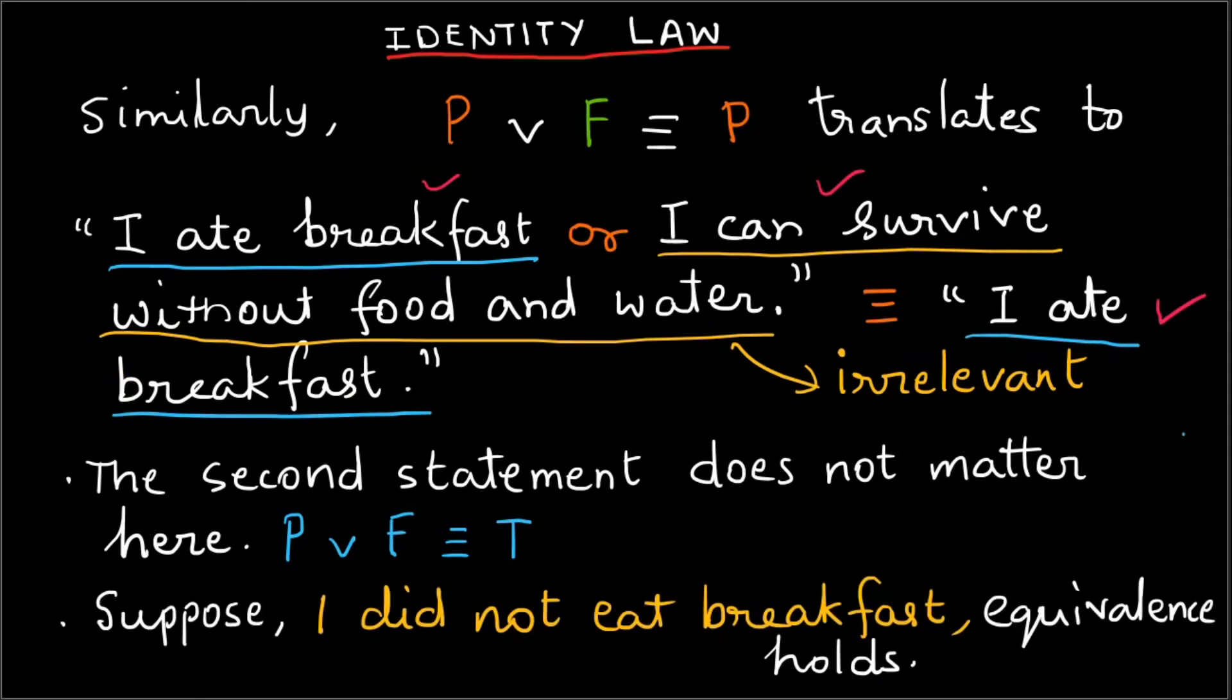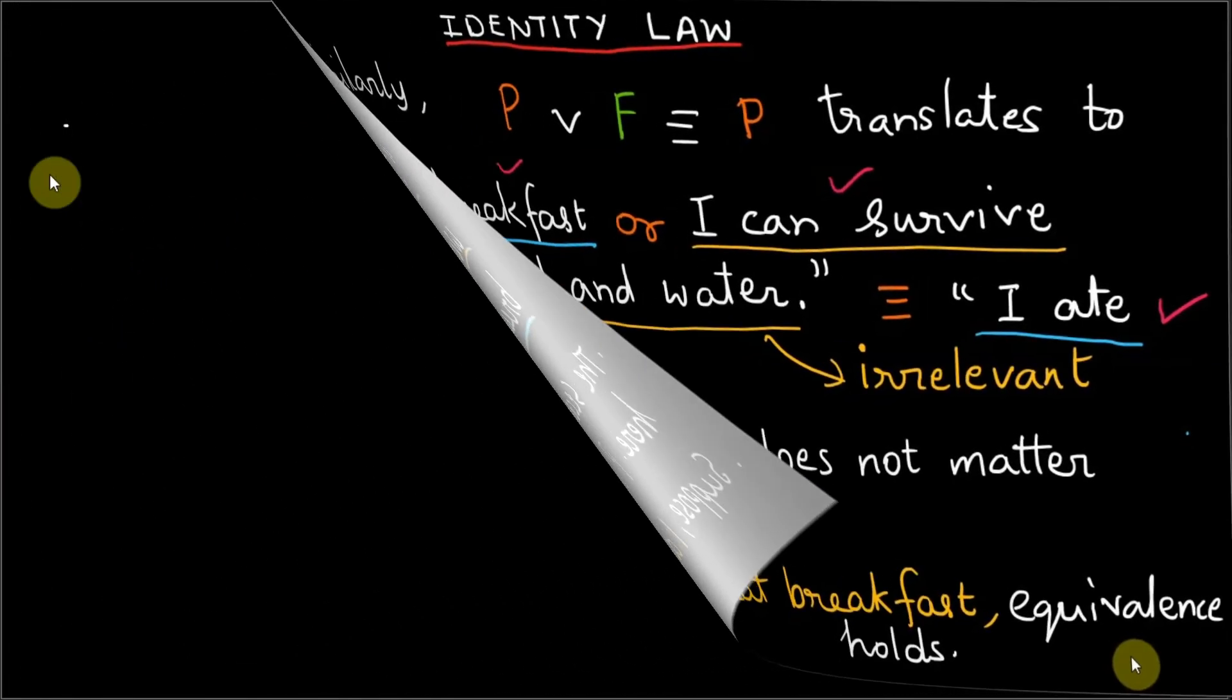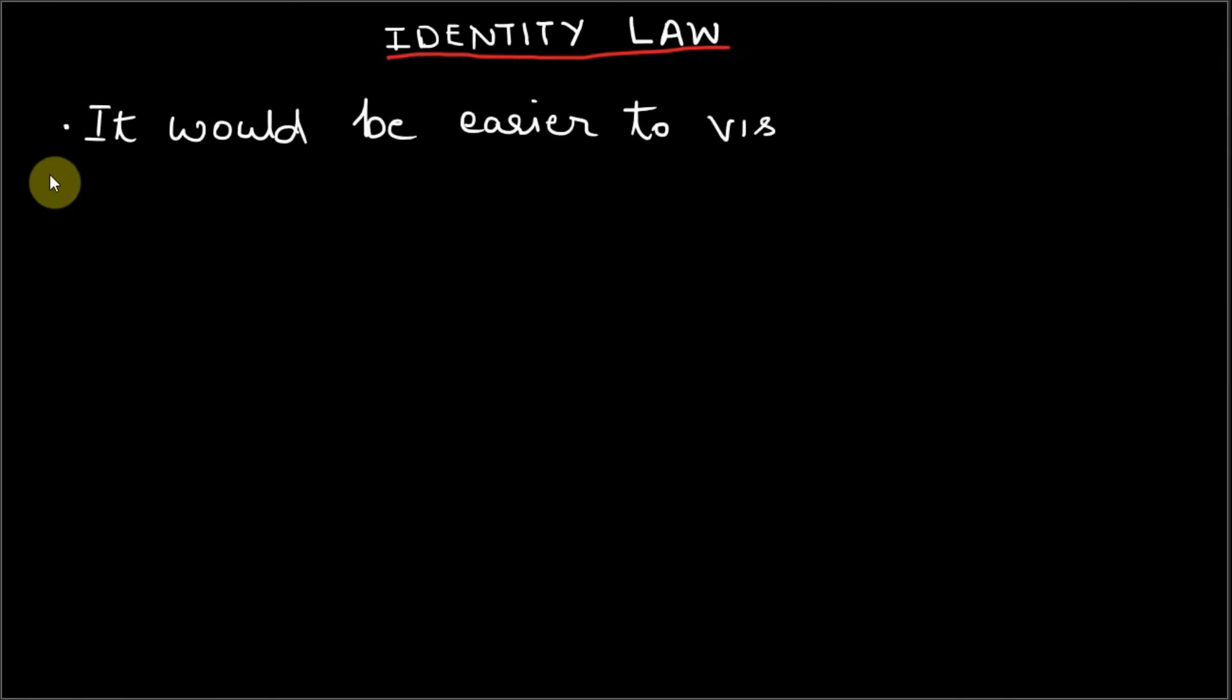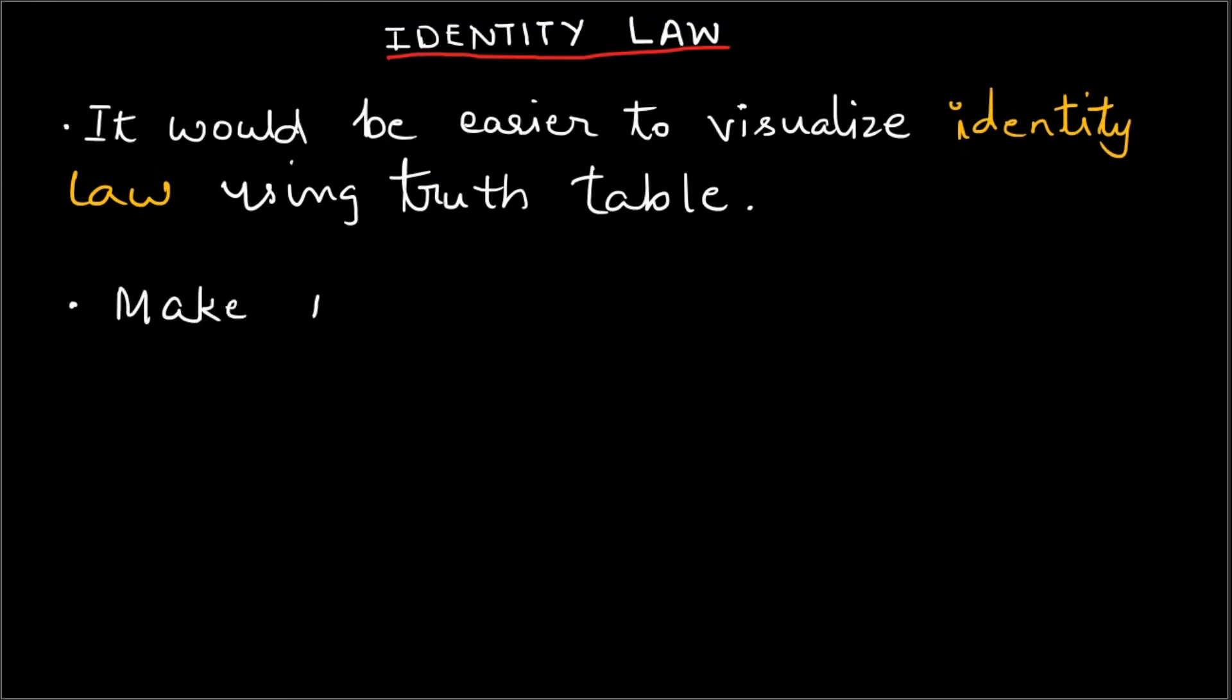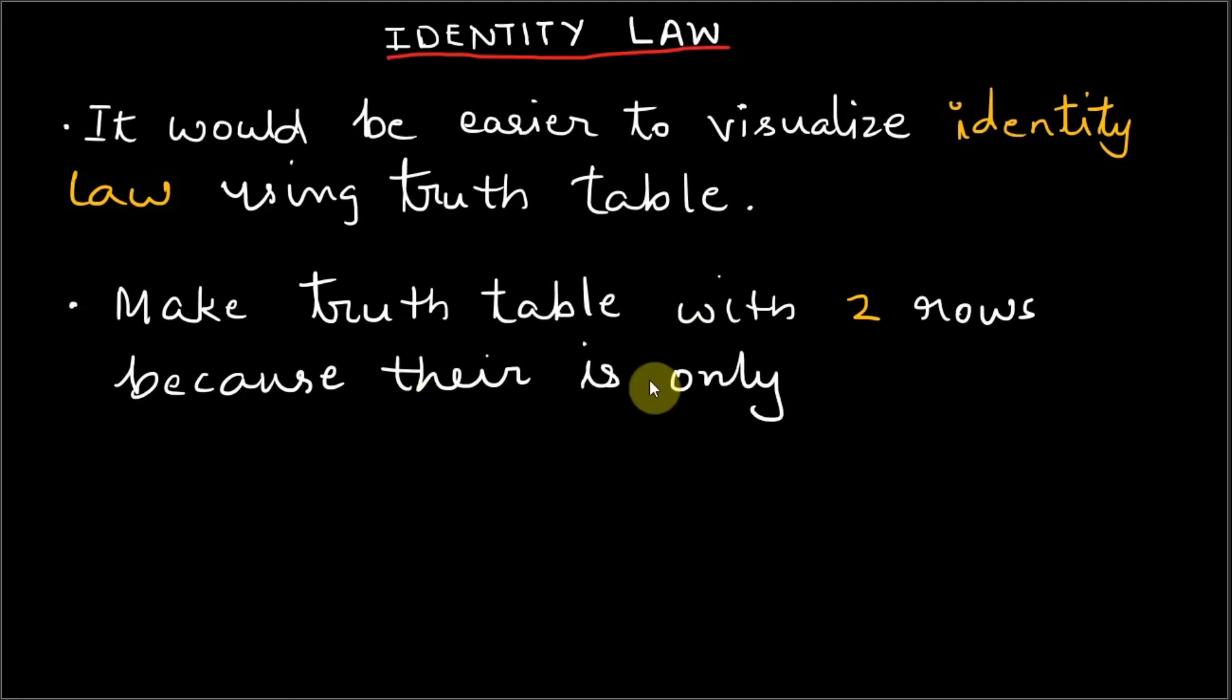It would be easier to visualize identity law using a truth table. First, we make a truth table with two rows because the compound proposition has only one variable, which is P, and the other entity identity is either true or false.